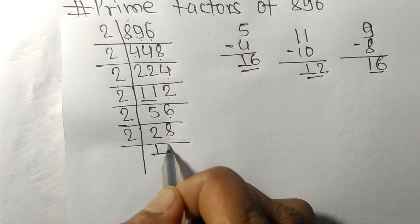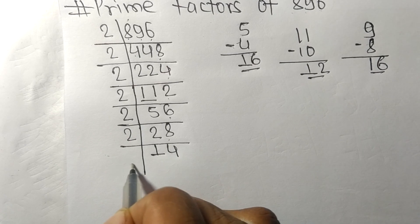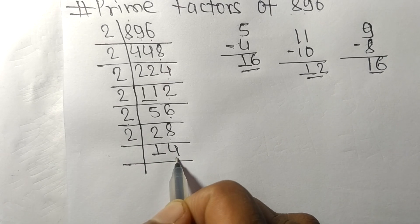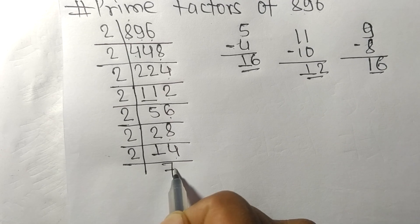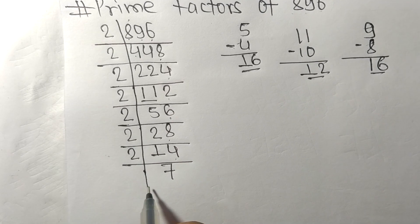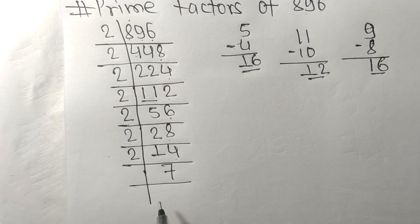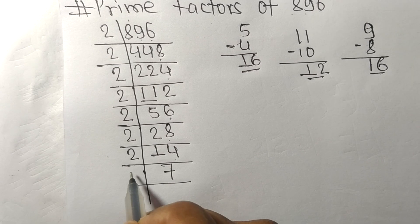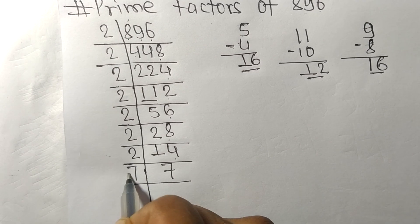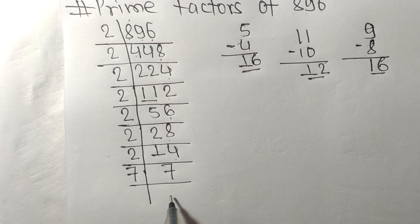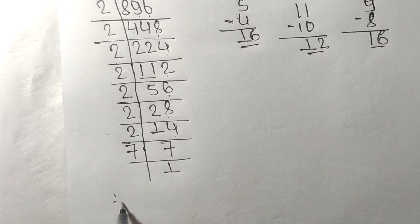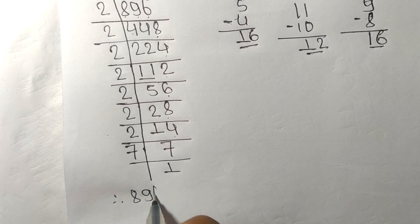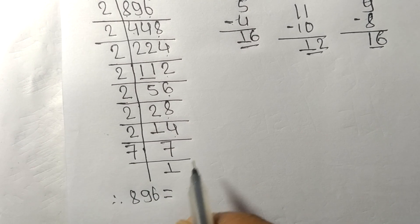2 times 7 is 14, so now we get 7, which is a prime number. It is exactly divisible by 7 only, and on dividing we get 1. Therefore, 896 is equal to its prime factors as follows.